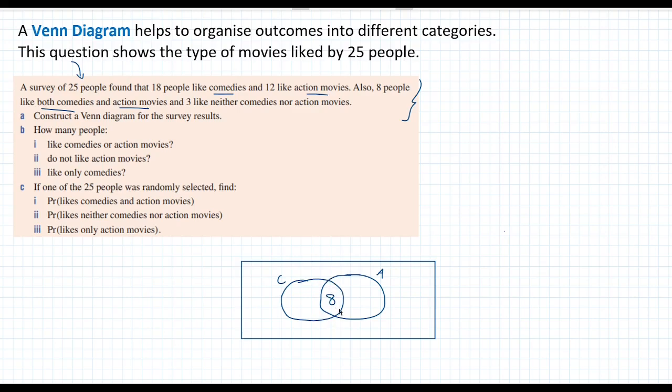Because this section in the middle represents people that like both comedy movies and action movies. Now, we've got 18 people that like comedies. So the number that's inside this complete circle should add up to 18. So if you do 18 minus 8, we've got 10. And we know that 10 people like only comedy movies.